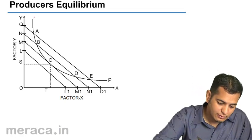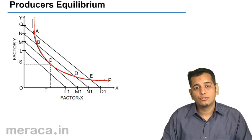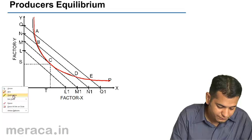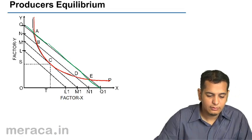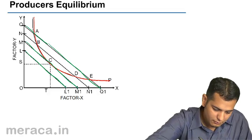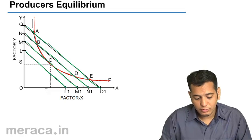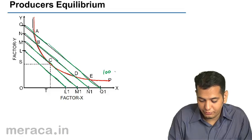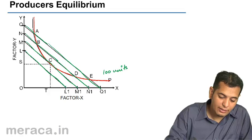In this diagram, you can see there is an iso-quant curve denoted by P, and there are various iso-cost lines highlighted in green. The producer wants to produce 100 units, and this level of output is shown by the iso-quant curve P.